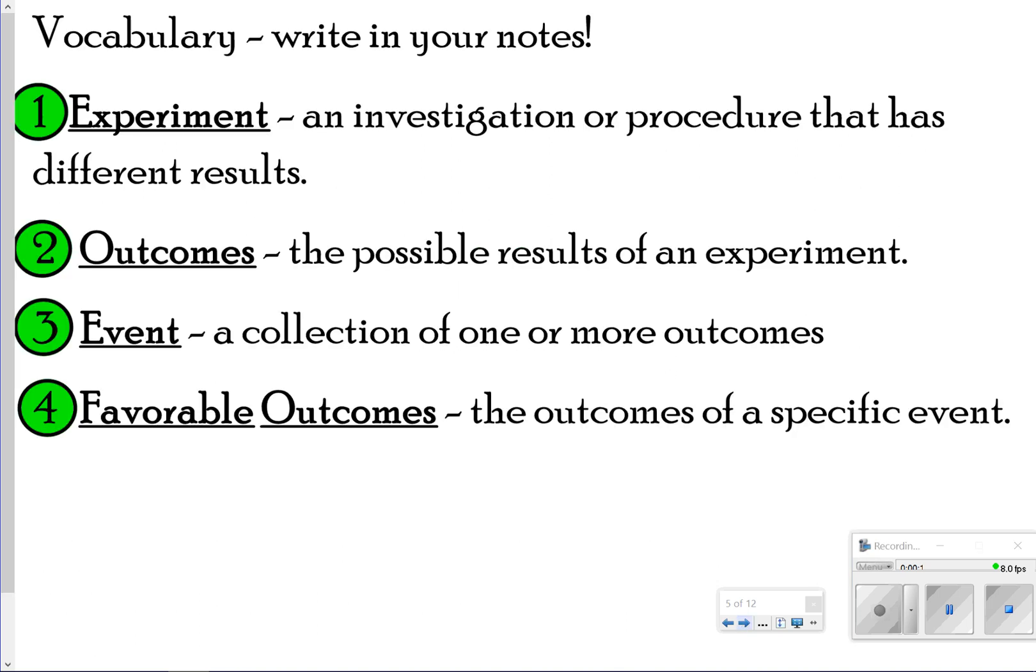The first thing we're going to write down are your vocabulary terms. You have number one, which is experiment, and that's just when you investigate an investigation or procedure that has different results. Number two is outcomes, and those are just all the possible results of an experiment. An event is the collection of one or more outcomes, and favorable outcomes are the outcomes of a specific event, and this is when you list the specific outcomes.